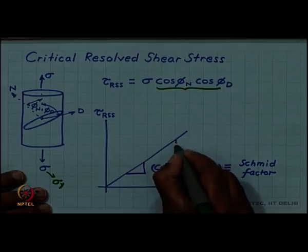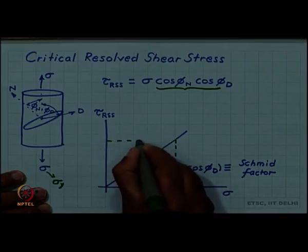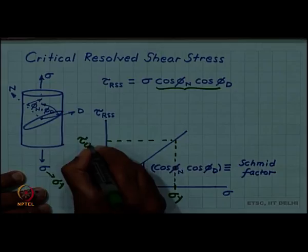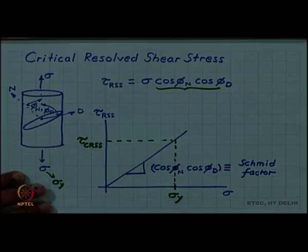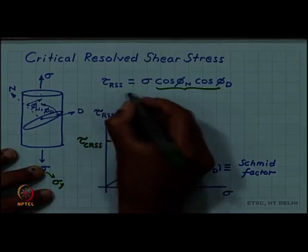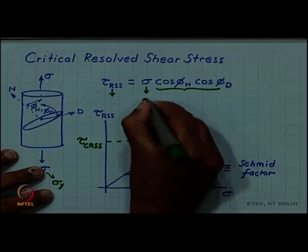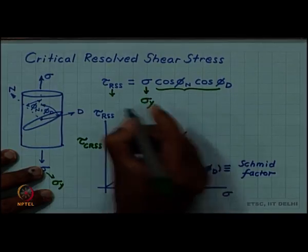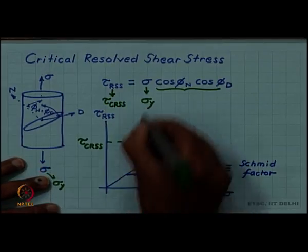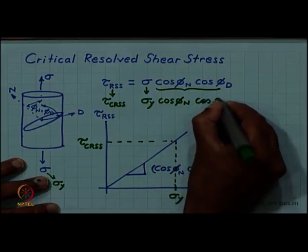Now, corresponding to that yield stress, if I find what is the resolved shear stress, that value of resolved shear stress will be called critical resolved shear stress, CRSS. Which means I am increasing the tensile stress. Tensile stress reaches a value sigma y. The correspondingly resolved shear stress reaches a value critical resolved shear stress sigma cos phi n cos phi d.